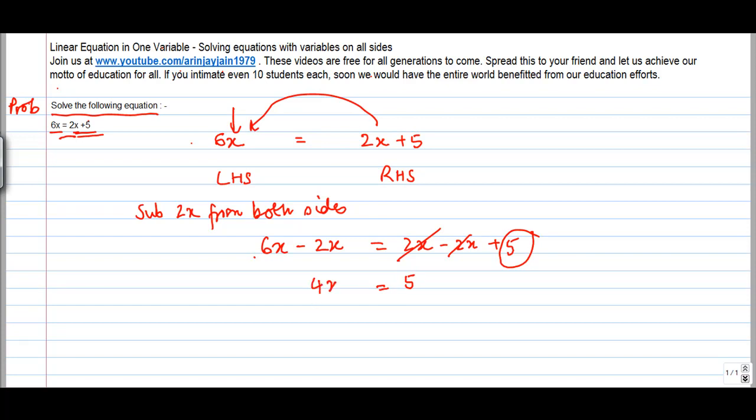6x - 2x gives me 4x. So 4x = 5. Therefore, x = 5/4.